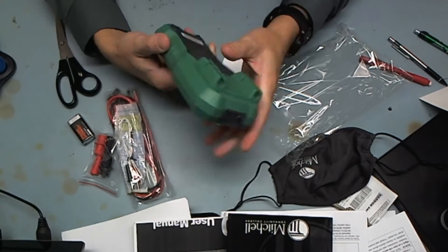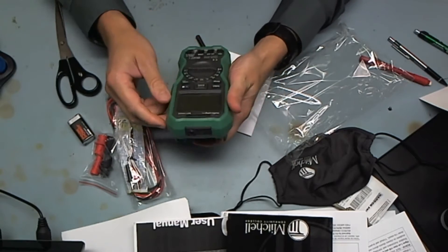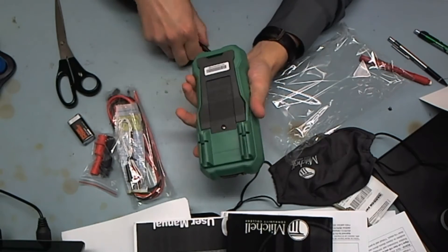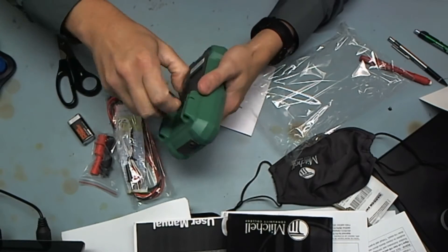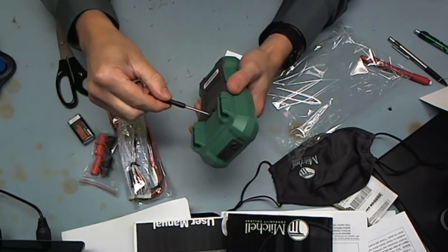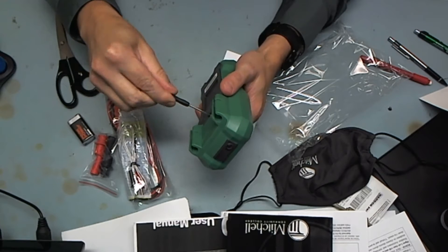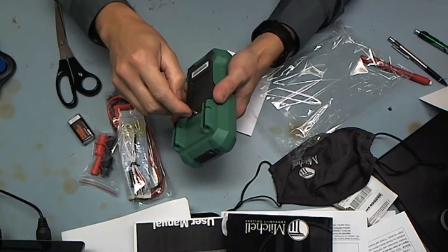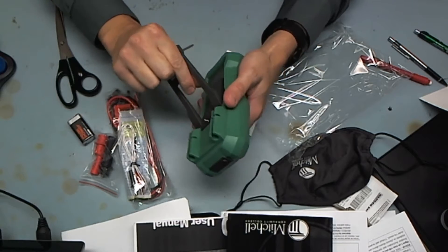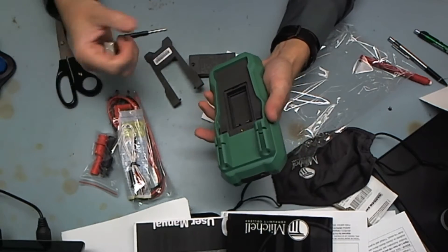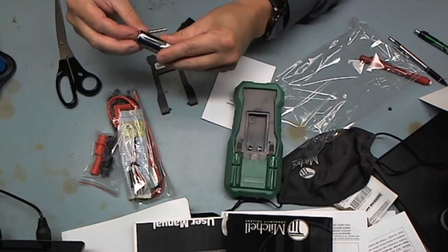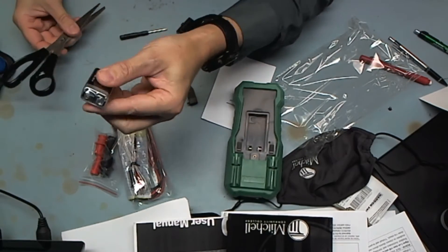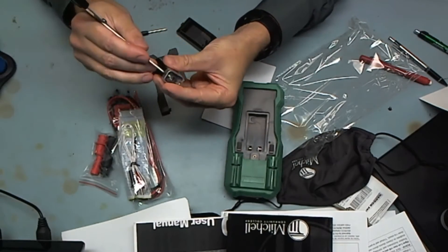It's got a nice rubber coating on it just like a Fluke meter does, kickstand, probe holders, pretty nice. Like I said, it was more than I expected. It came with a little screwdriver to take this off. That's convenient. Let's go ahead and get our battery in. First time I've ever seen a 9-volt wrapped.